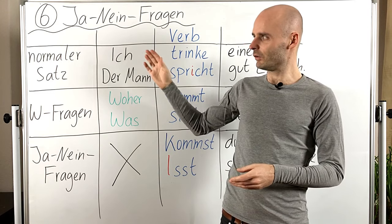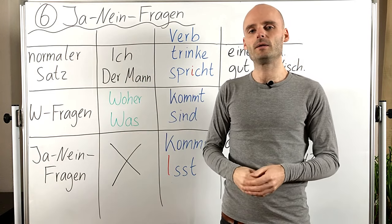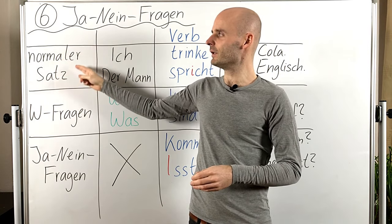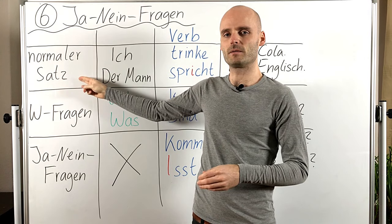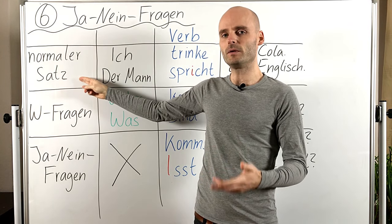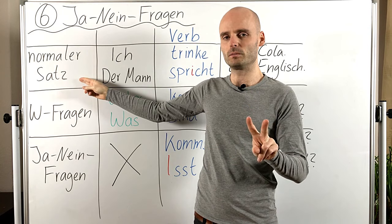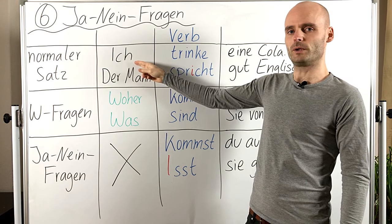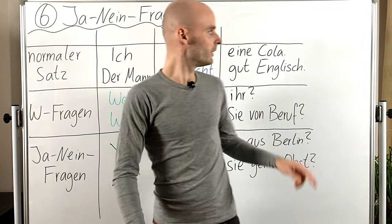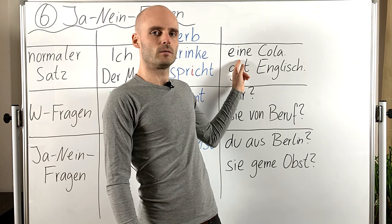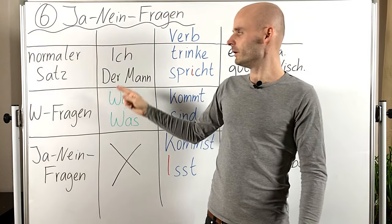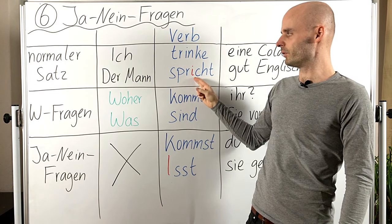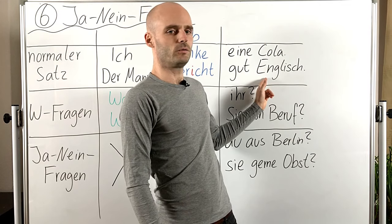So we are going to take a look first of all at the sentence structure again. Also, hier haben wir einen normalen Satz, a normal sentence. And as I told you already, in a normal sentence the verb is always in position two. Also, ich trinke — ich, Position 1, trinke, Position 2, eine Cola, Position 3. Oder: der Mann spricht — das Verb, Position 2 — gut Englisch, Position 3.